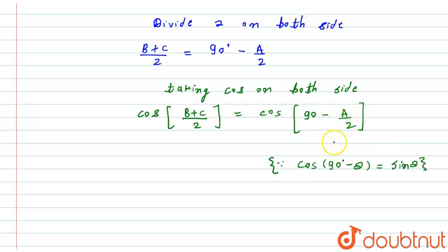So hence, I will get cos((B+C)/2) equals sin(A/2).